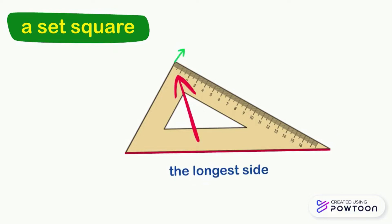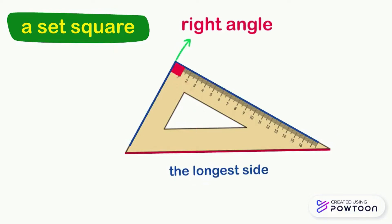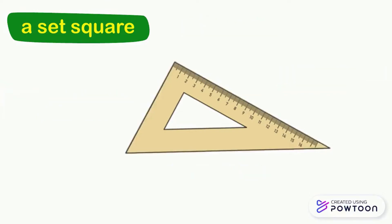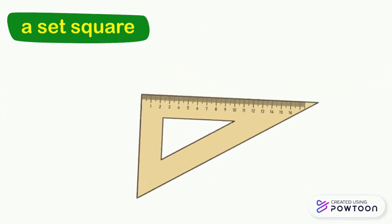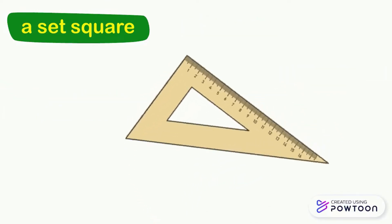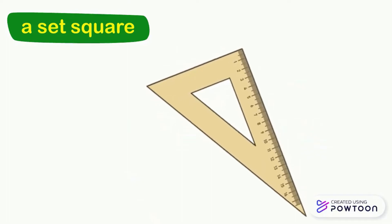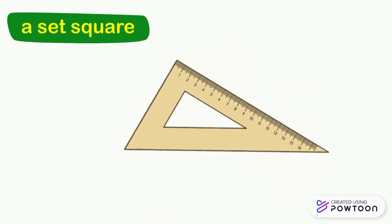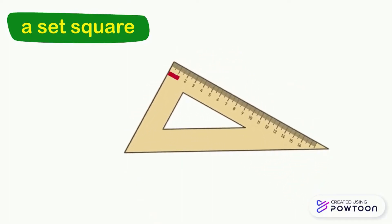The right angle is opposite to the longest side. These two edges are called the sides of the right angle of the set square. We can turn the set square in any direction, and the largest angle is always right in any direction. We make a small sign like this to indicate that it is a right angle.